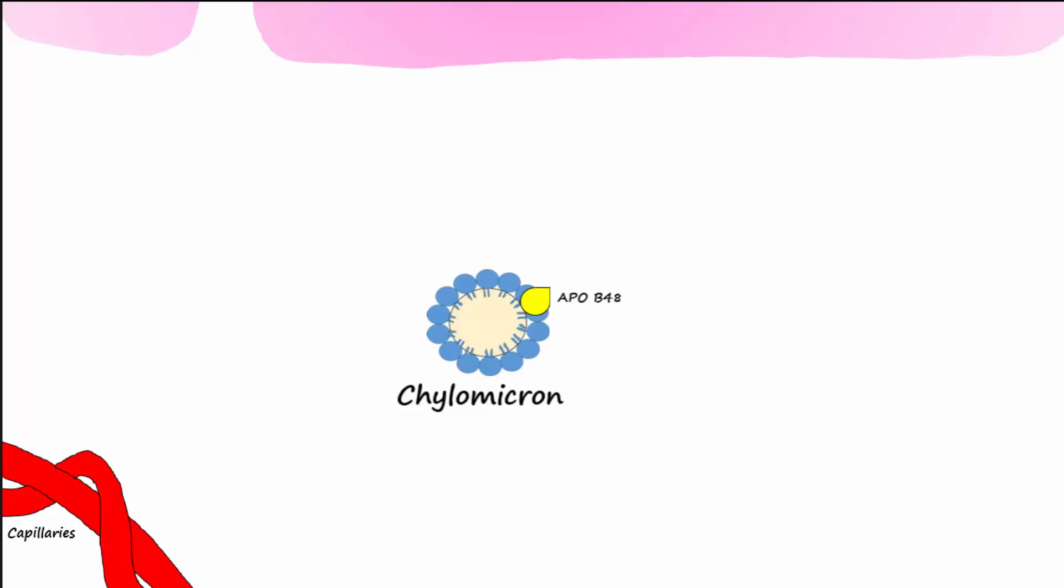A chylomicron is full of triglycerides, abbreviated TG here, that will be delivered to different cells of the body for energy. The ApoB48 is a hydrophilic protein that allows the chylomicron to be transported in aqueous solutions like the blood or lymph fluid. Chylomicrons are too large to enter the capillaries surrounding the enterocytes of the gut, so instead they first enter lacteals of the lymph system.